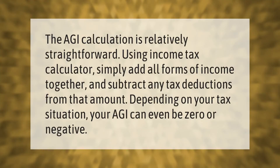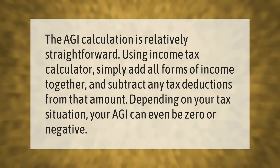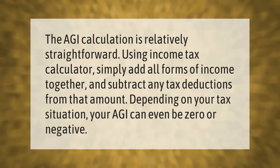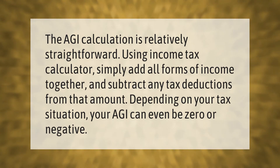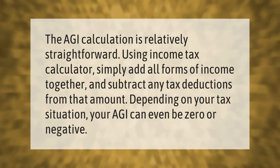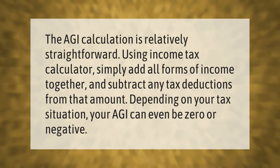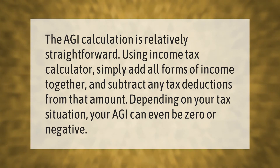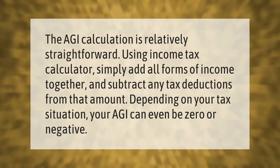The AGI calculation is relatively straightforward using an income tax calculator. Simply add all forms of income together and subtract any tax deductions from that amount. Depending on your tax situation, your AGI can even be zero or negative.